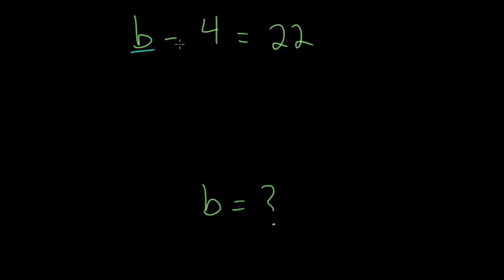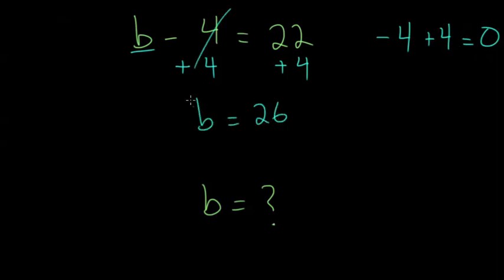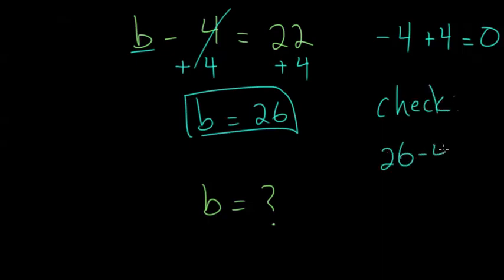Right now we want to get b by itself, but it's being subtracted by four. To cancel out this minus four, we want to do the opposite. We want to add that same quantity that we're subtracting. So we add four to both sides just so we don't change the problem. Minus four plus four, that cancels out to zero. We get b is 26. Then we check it. Is it true that 26 minus four equals 22? That is true, which means we can feel confident that's the right answer.